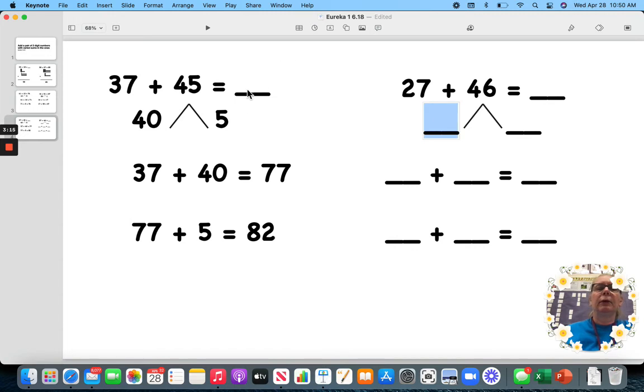This is, put it here. This is 46. So, then we have 40. That's our tens. How many ones we got? 6.